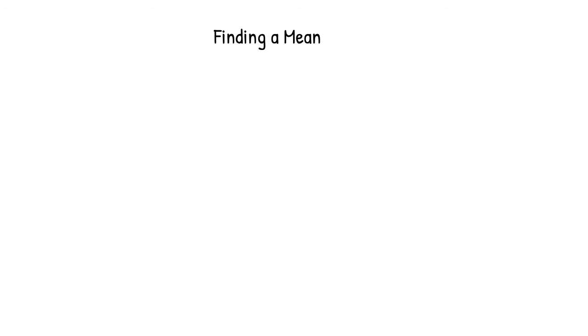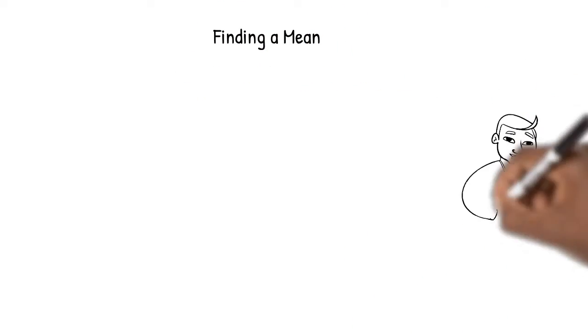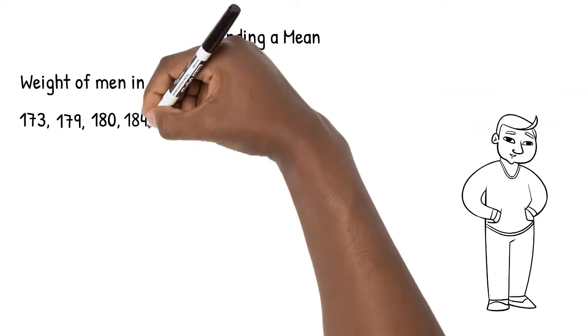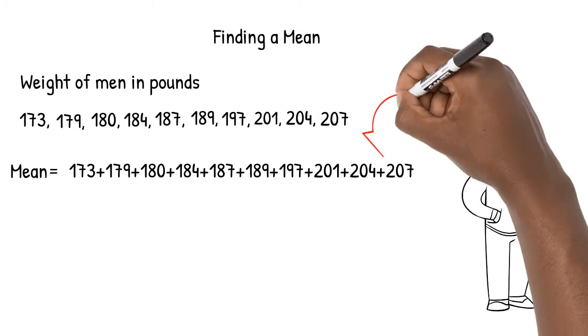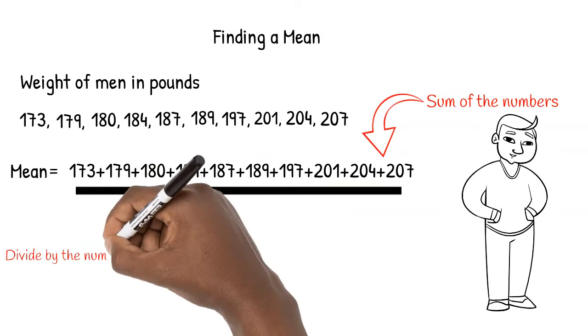In this video we'll learn how to find the mean of a set of quantitative data when presented as a list, a table, or a histogram. Let's take a look at the weights of a group of men. If asked for the mean, we find the sum of the numbers and divide by the number of numbers.